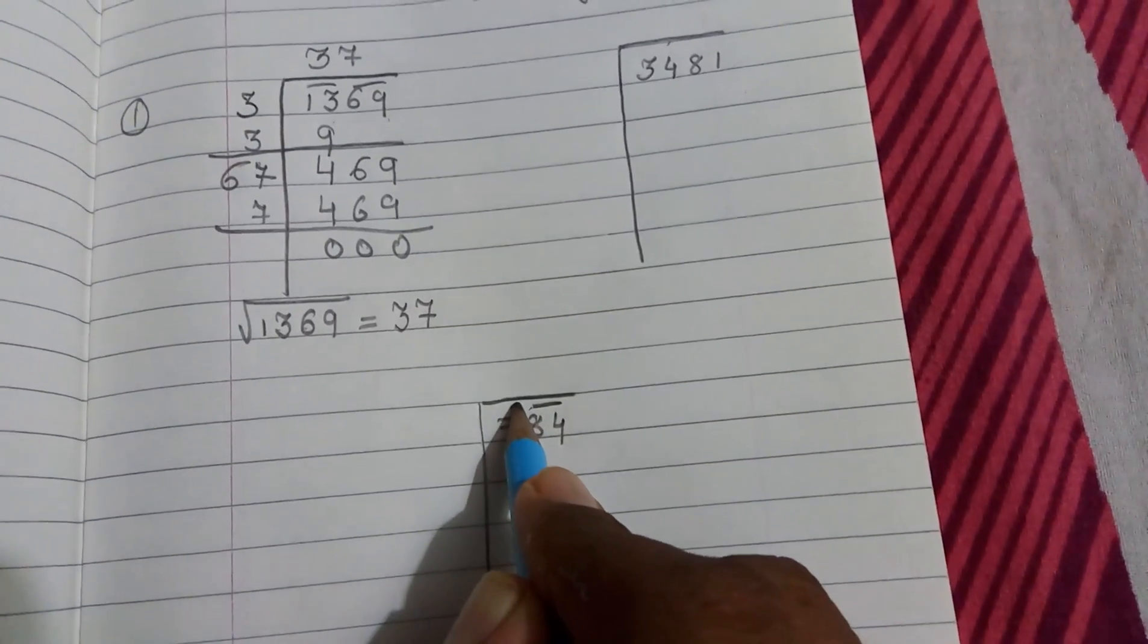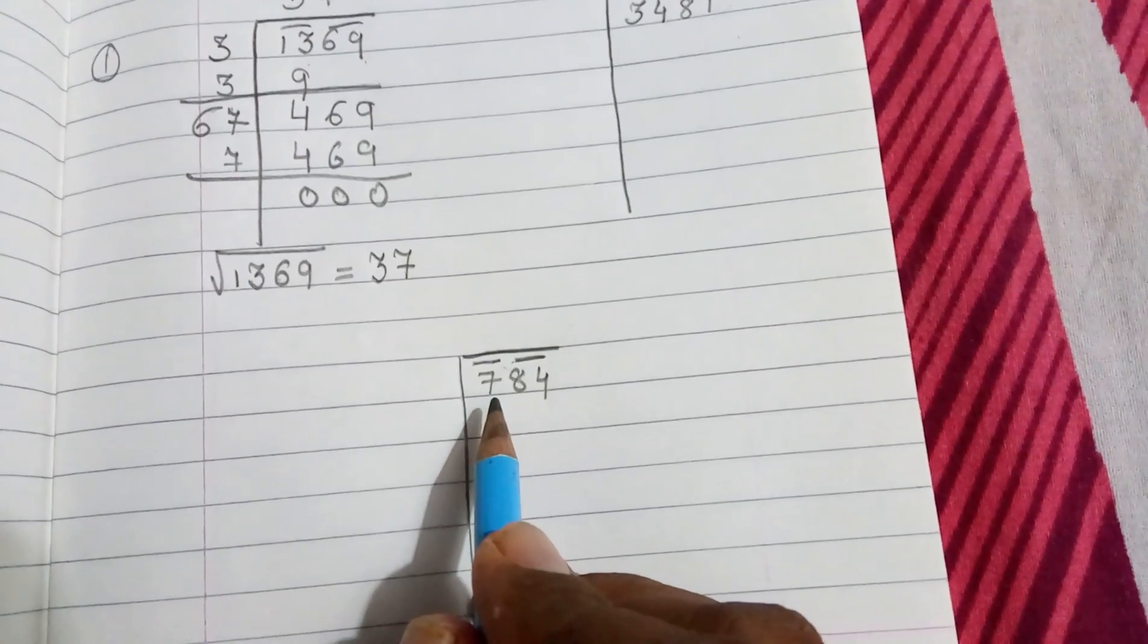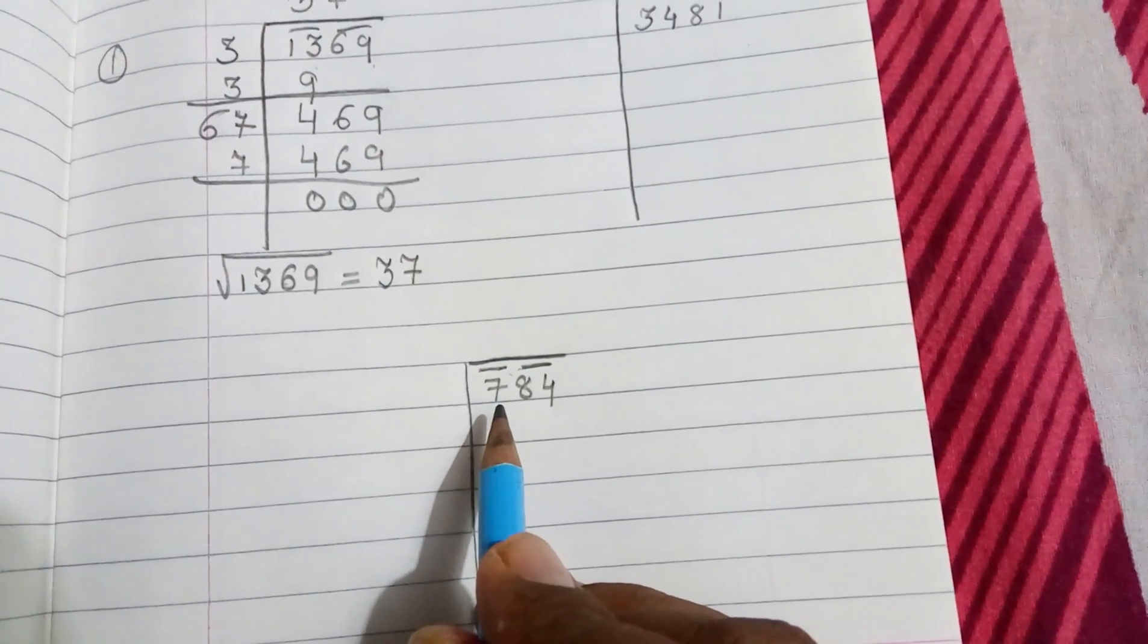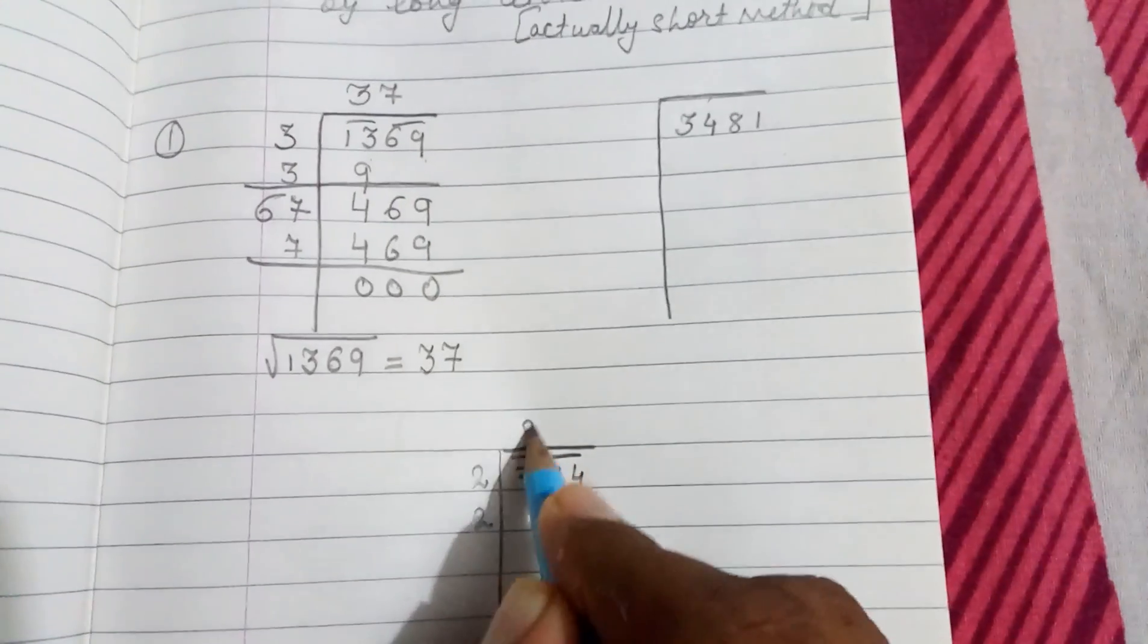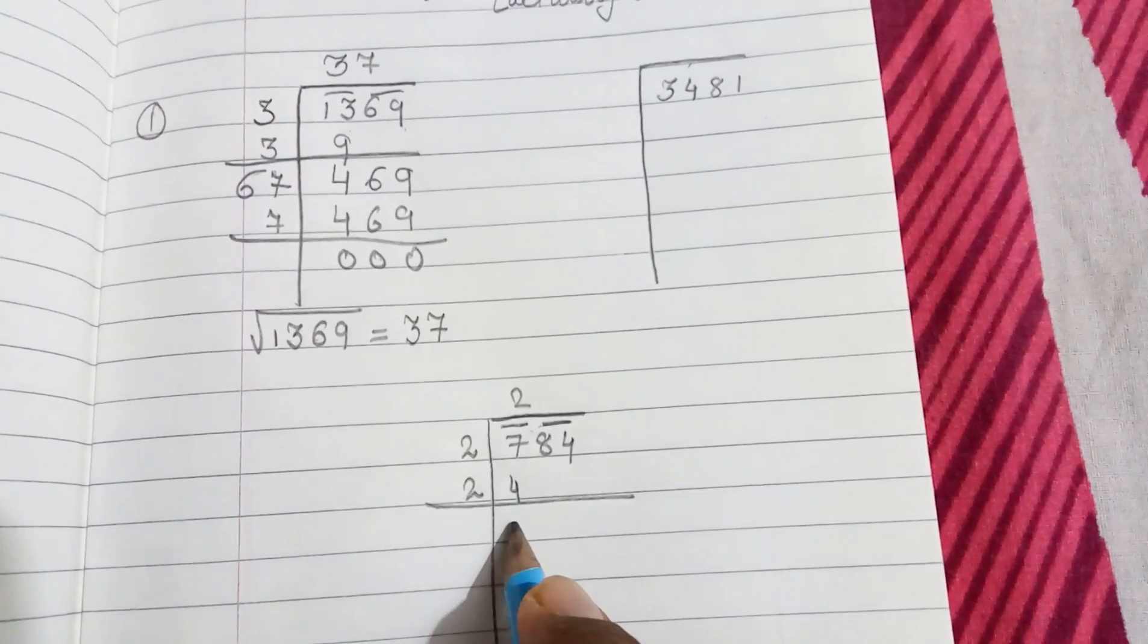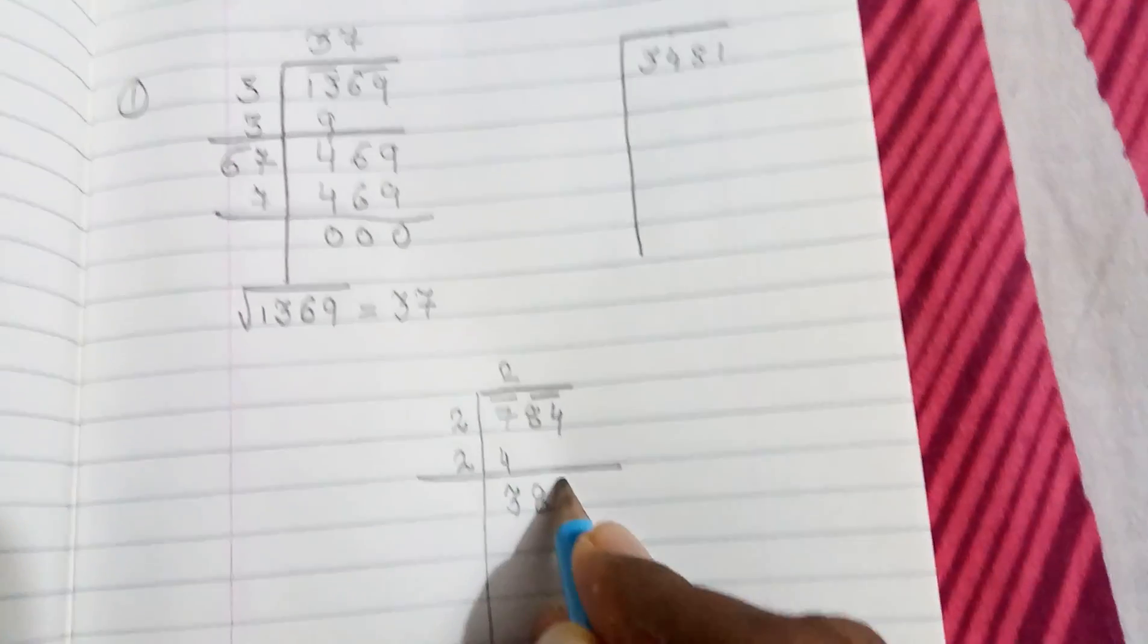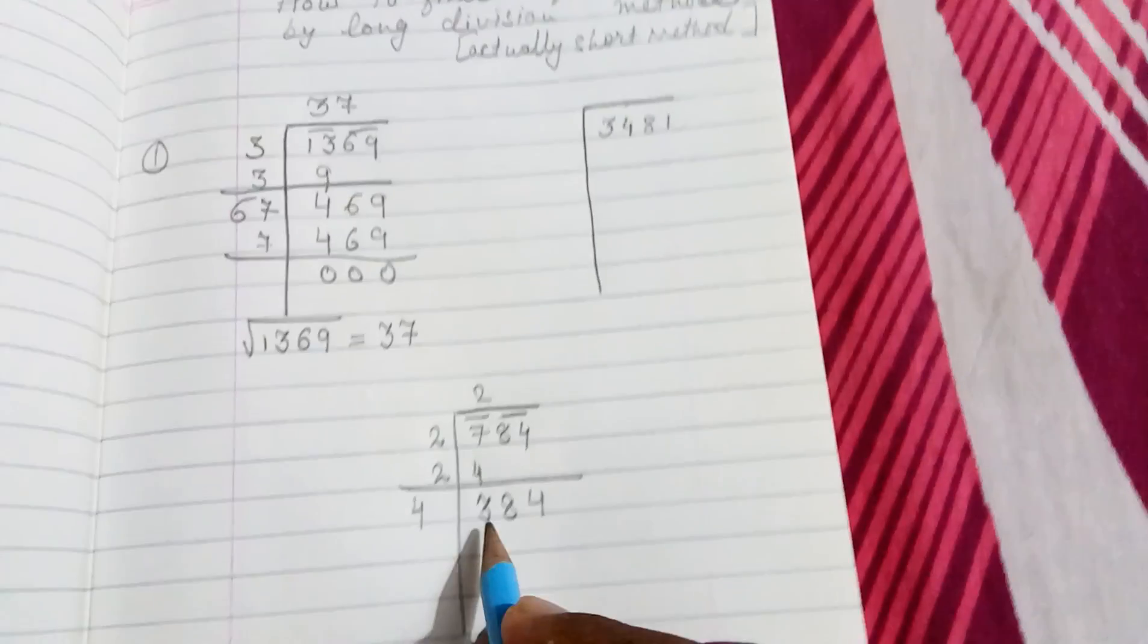Now the nearest perfect square of 7: 3×3 is 9, so we will take 2×2. Here also 2 and 2. 2×2 is 4. Subtraction: 384. And here is 2 plus 2 is 4.